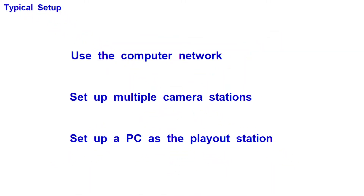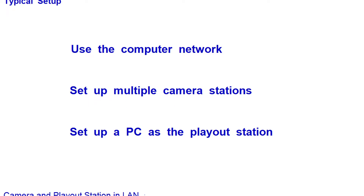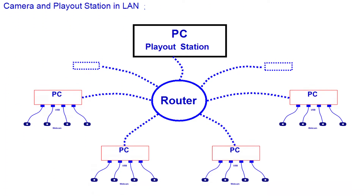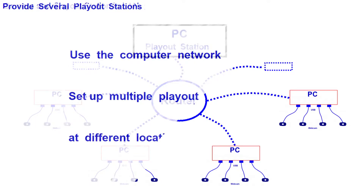Together, the set of webcams and the PC form a camera station. Many camera stations can be set up in the office within the local area network. A PC in the local area network is used to receive video and audio data from these camera stations and play out the videos from all webcams. This PC is the play out station of the video network system. In fact, multiple play out stations can be set up in the local area network.